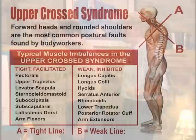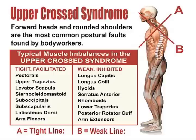We'll have Tim stand sideways here. It's characterized by these tight, facilitated muscles: pectorals, upper trapezius, levator scapulae, sternocleidomastoid, anterior scalenes, and suboccipitals. It's a good idea to memorize the ones that are going to be tight, because then you can look for them and test for them as you go through.